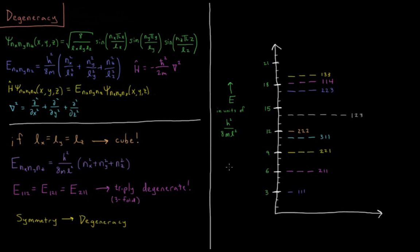So if we plot out in units of h squared over 8 mL squared, to where it's just the sum of these three quantum numbers squared, we plot out what the energies of these different states are. At 3, 1 squared plus 1 squared plus 1 squared, we just have the 1-1-1 state.